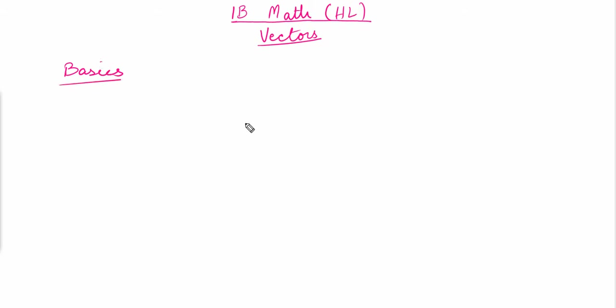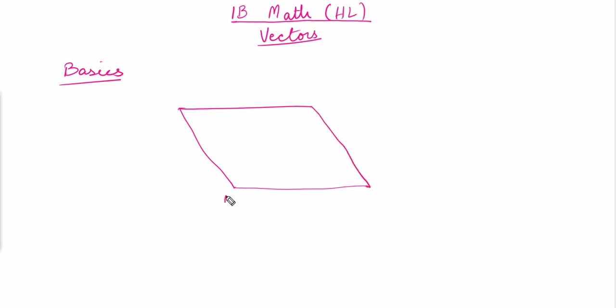Let's suppose we have a parallelogram with four vertices: P, Q, R, and S. The vector from P to Q is A and the vector from Q to R is B. We have to work out the vectors for different points on this parallelogram. A vector is used to represent the size and direction from one point to another.